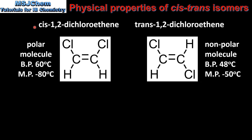The cis isomer is a polar molecule because it has both chlorine atoms on one side of the double bond. The trans isomer is a non-polar molecule because it has the chlorine atoms on opposite sides of the double bond.